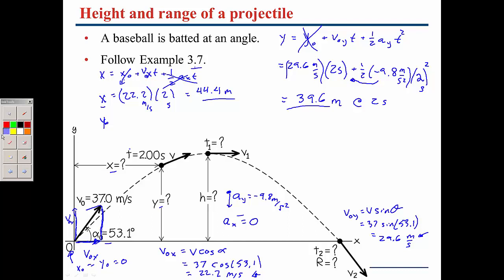Now solve the rest of the problem yourself. The key to solving for the maximum height and the time to reach it is that the y-velocity equals zero at the top. Rearrange one of the equations to solve for the time when vy equals zero, then check your answers with example 3.7 in the book.